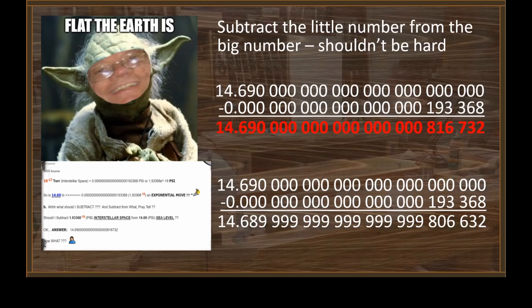9 from 9 is 1 — strike 2, Kiwi. 1 from 9 is 8. 0 from 9 is 0, and that goes on for a ways. Did it occur to you that the number you ended up with is actually larger than the number you started with, yet you subtracted something from it? Do you suppose if you had done the math correctly, you would have gotten a number that looks something like that?